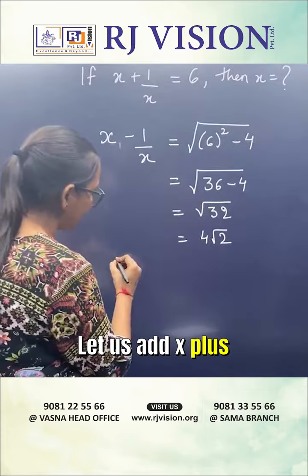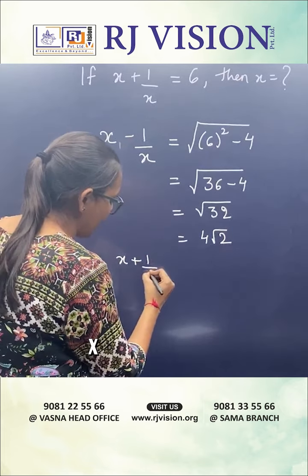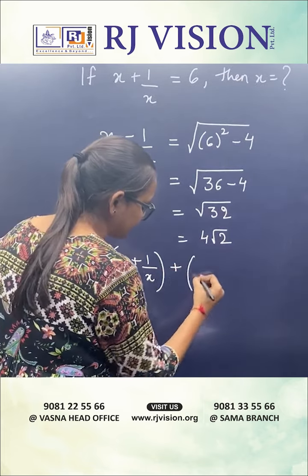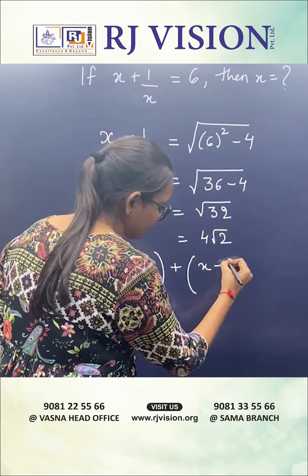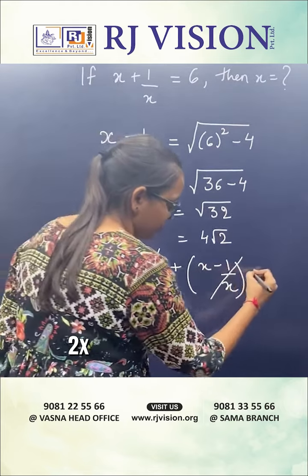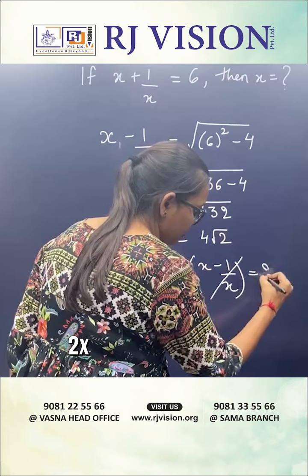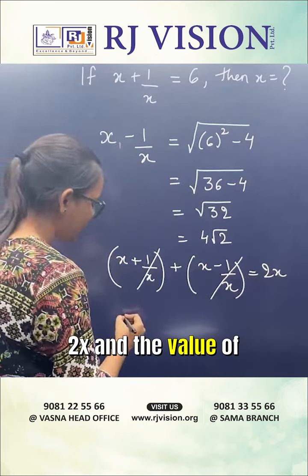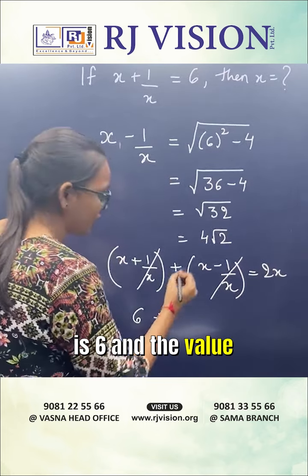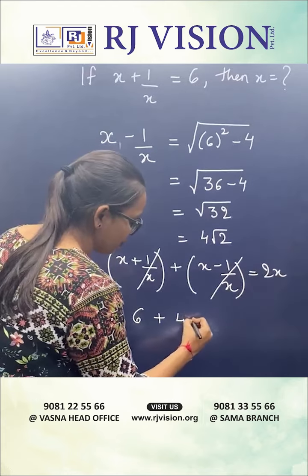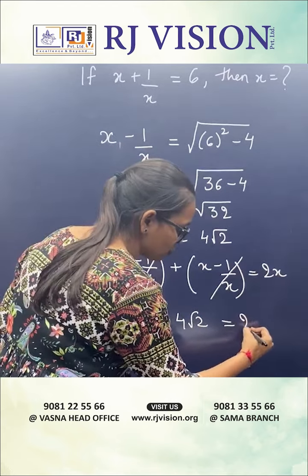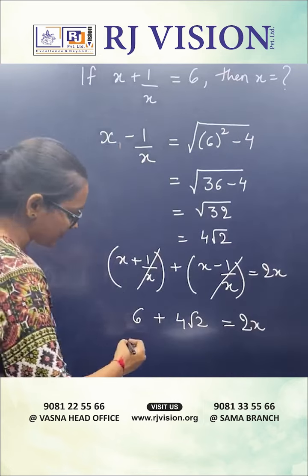Let us add x plus 1 by x and x minus 1 by x. This on adding will give 2x. The value of x plus 1 by x is 6 and the value of x minus 1 by x is 4 root 2. So we have 6 plus 4 root 2 is equal to 2x.